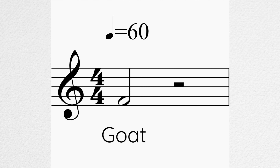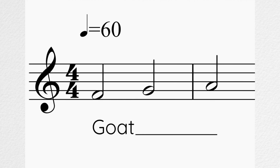Goat. Let's try that with a longer note. All we alter to change the duration of the note is to extend the vowel sound and place the final consonant at the end. Here we have a two-beat note. Goat. Words can contain multiple syllables, and syllables can be sung on several notes. Lyrics in musical notation is written out by syllables, because each note we sing is sounded on a single syllable. Sometimes multiple notes will be used for one syllable.